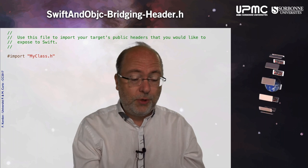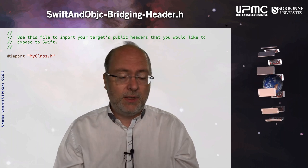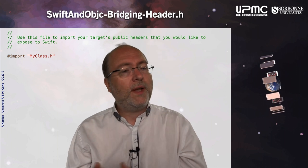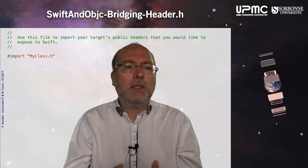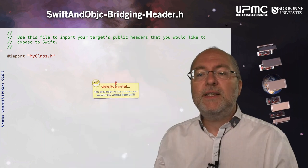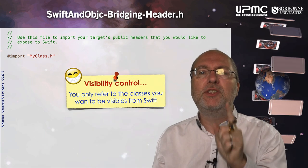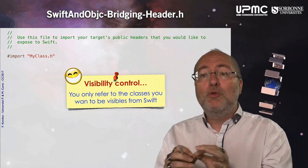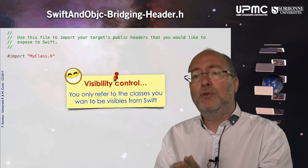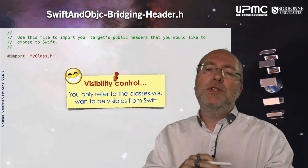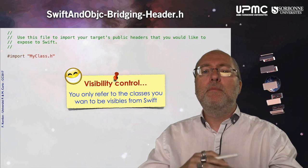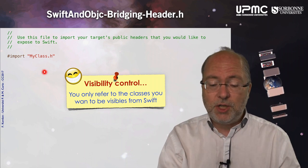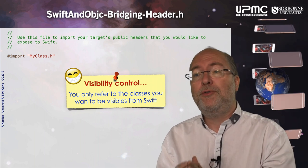This is the bridge part, the file that has been created by Xcode, and here I simply import what I want to import, so here MyClass.h. This is quite interesting because this provides you a control on the visibility of what you want to be visible from Swift and what you want to hide. Let's imagine you have a large project with many Objective-C classes. You can decide that you will just have access from the Swift side to a few of those.